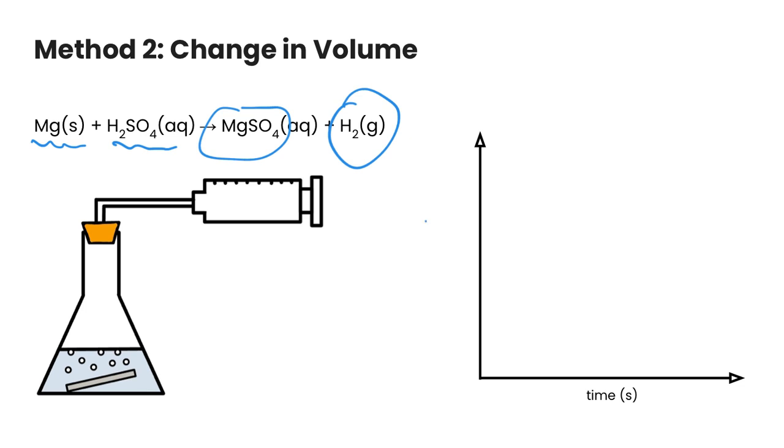So in this scenario, we're measuring the volume of gas being produced, maybe in milliliters, maybe in liters, it depends what you're doing. Pretty typically, it's probably going to be milliliters. And since this is a product, we're going to get a graph that starts at zero, increases rapidly, and then eventually plateaus out.